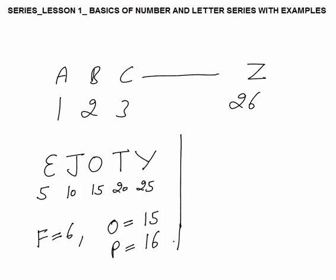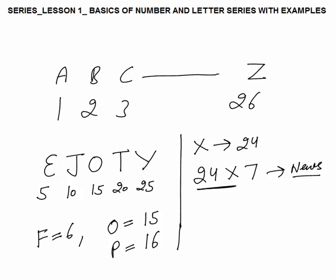To remember that X equals 24, think of news channels being 24 cross 7 — that is, 24 hours, 7 days. News channels are 24 into 7, so X means 24. This is just an easy method of remembrance so you don't need to cram much.